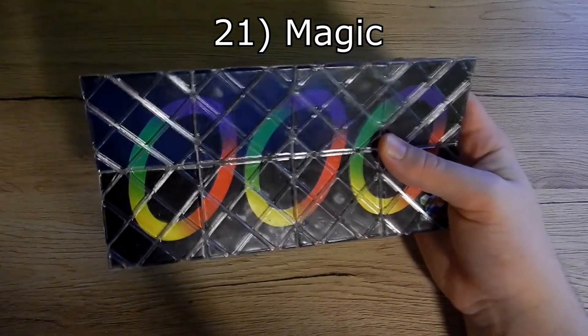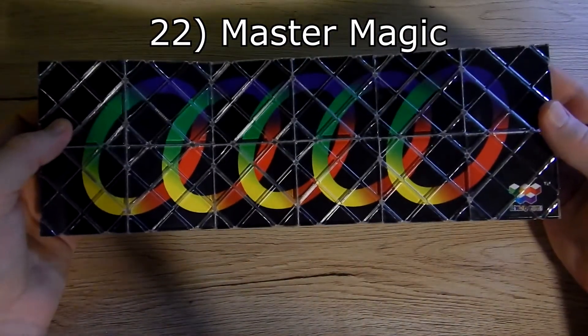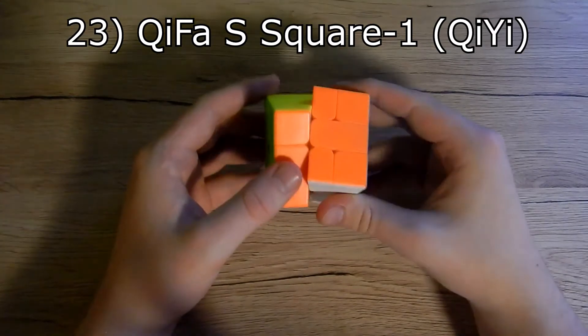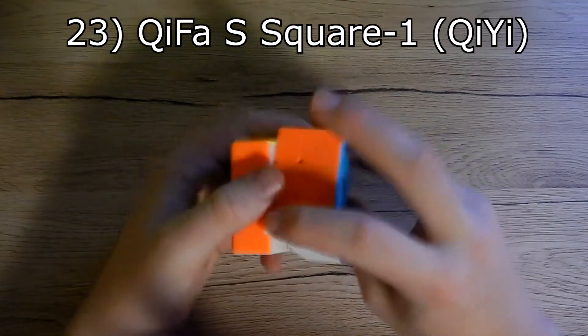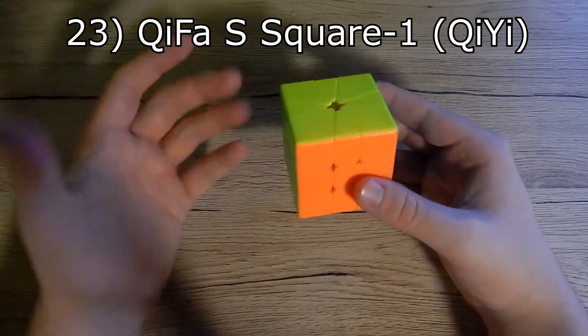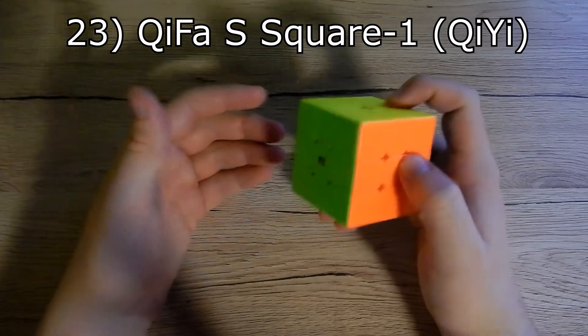I also have master magic. Next we have a Qifa square-1 from Qiyi, and it's a very smooth turning. I like it because square-1 is my favorite puzzle. It is very hard and I'm very happy I can solve it.